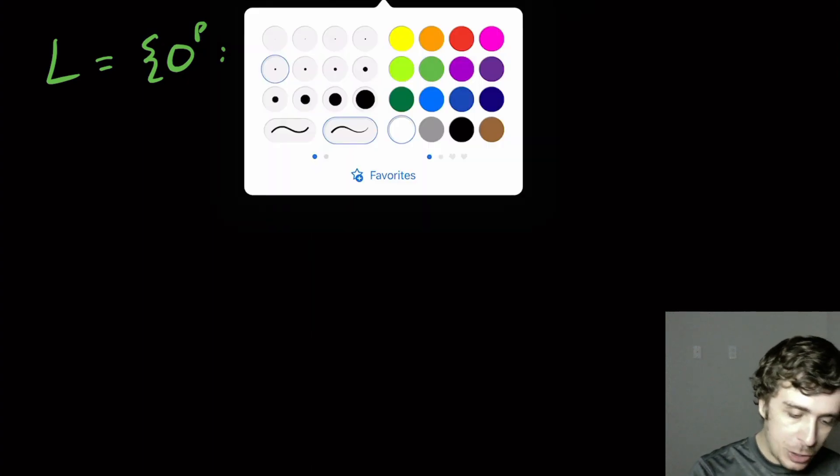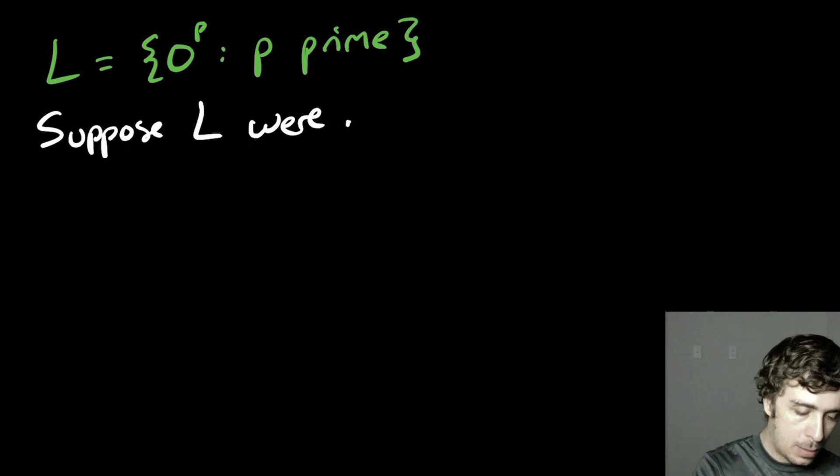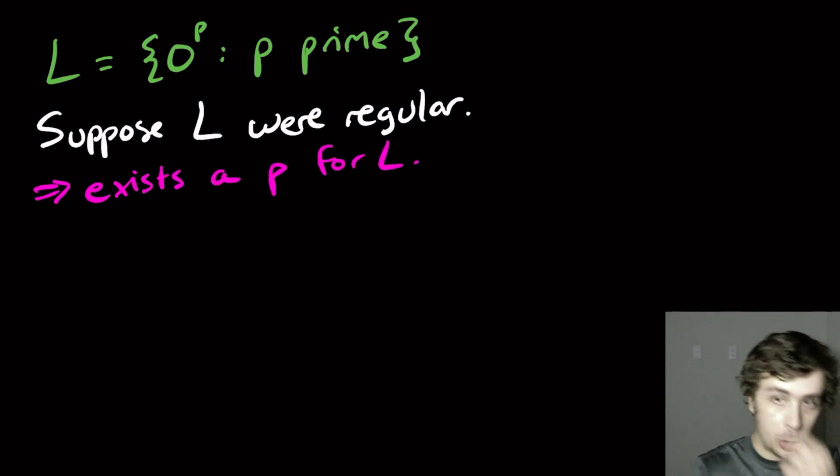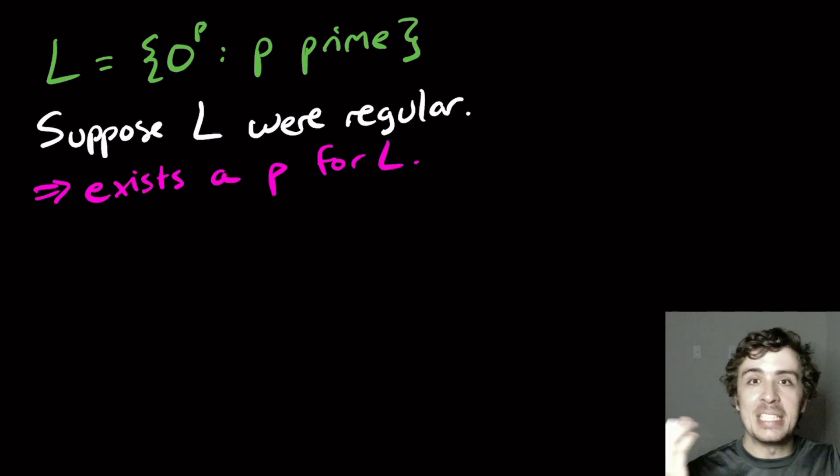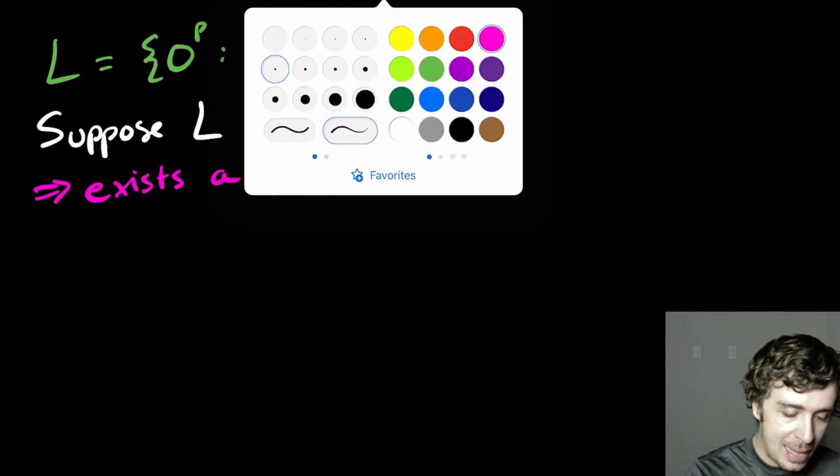So we always start off every pumping lemma proof by supposing that L were regular. Then we know that there exists a pumping constant P for L. And what we need to do is pick a string that's in the language and long enough, meaning that it has length at least P.